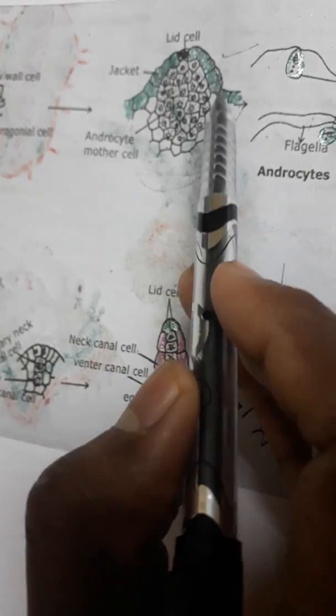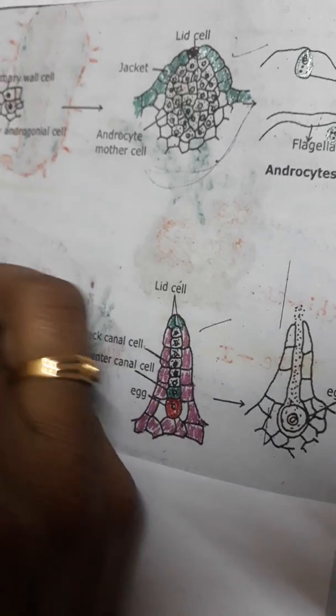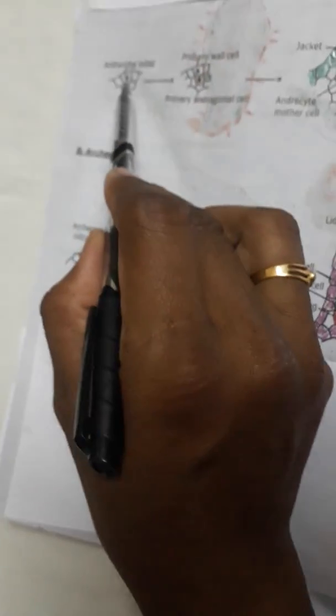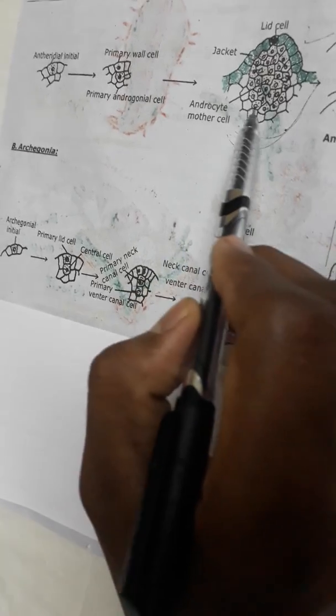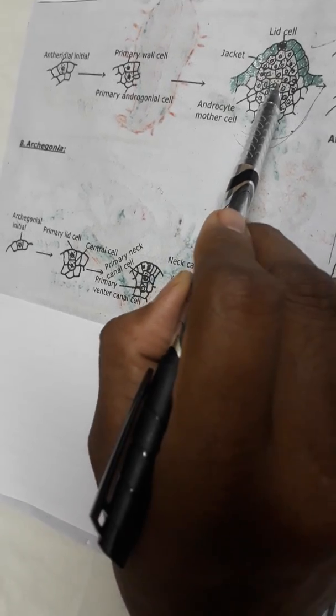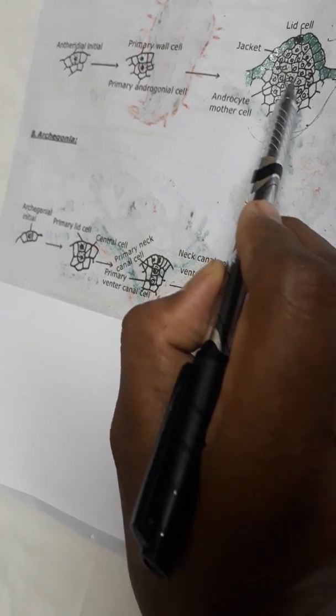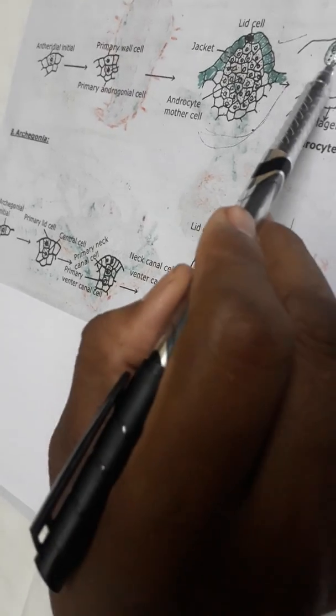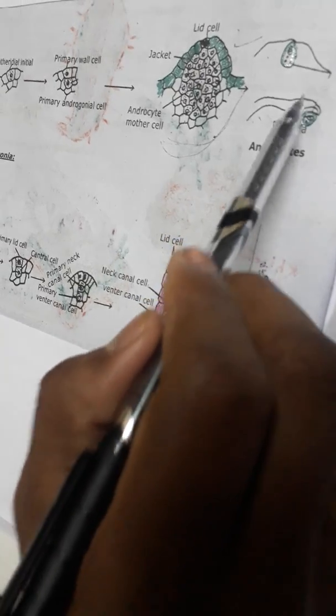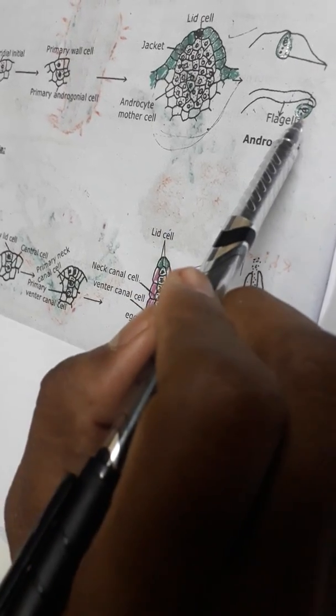The antheridium has jacket. The entire antheridium originates from antheridial initial cell, single cell. The antheridial initial cell produces complete antheridium. It is jacket. These are lid cells, number of cells are two. These are androcyte mother cells. Every androcyte mother cell goes to oblique division to form two androcytes. Every androcyte is oval shaped with two long biflagellated. So biflagellated androcytes originate from the antheridium.